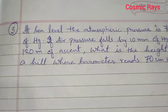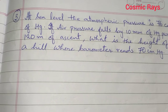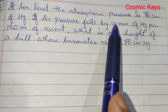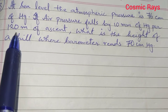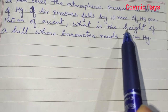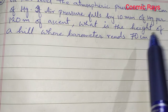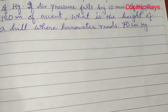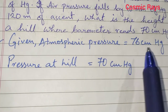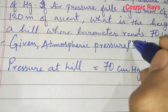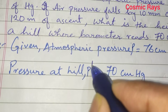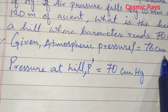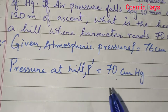Now we go to question number 3. It says at sea level the atmospheric pressure is 76 centimeter of mercury. If air pressure falls by 10 millimeter of mercury per 120 meter of ascent, what is the height of a hill where the barometer reads 70 centimeter Hg? Atmospheric pressure P is 76 cm Hg and pressure at the hill P' is 70 cm Hg.